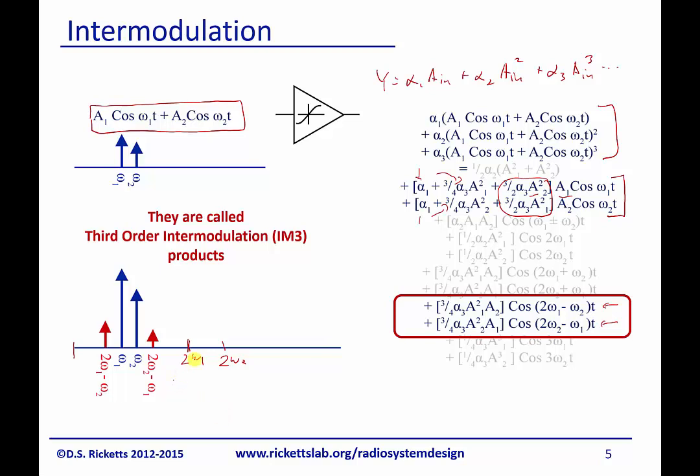And what you see here is we've got these two sidebands adjacent to our two initial signals, and their amplitudes are a result of the coefficients that we see here. These are called third-order intermodulation products, and if you're wondering why third-order, you can see that you actually have a cubed term right here from the two amplitudes.